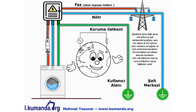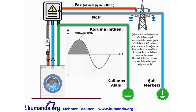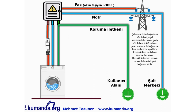Nötr iletkeninin topraklanmasının nedeni yeryüzünün iletkeninin kullanılmasıdır. Sinüsoidal eğrimde artı alternans ve eksi alternans vardır; saniyede 100 kere elektrik akımı şebekemde yön değiştirir. Artı alternansta akım fazdan gelir, cihaz içinden geçip nötrden şebekeye döner; eksi alternans da ise nötrden gelir, fazdan dönüş yapar. Anlatımı sadeleştirmek için hep akımın fazdan geldiğini, nötre ya da topraklama iletkenine gittiğini söyleyeceğim — teknik olarak yanlış ama anlatım için gerekli bir basitleştirme.